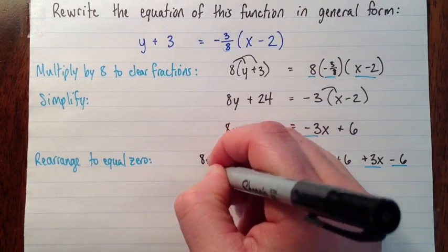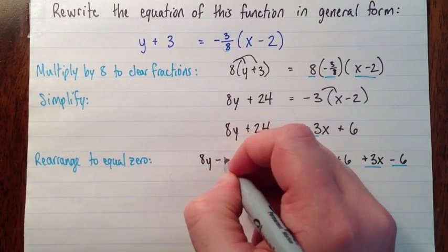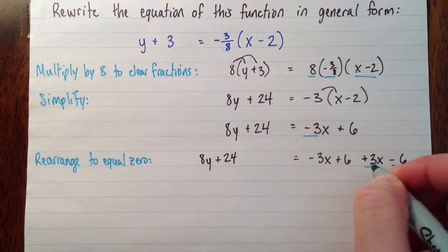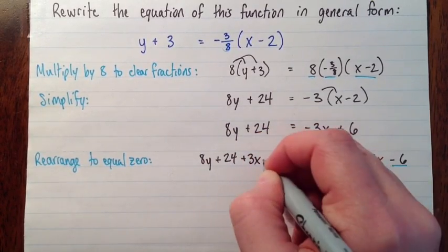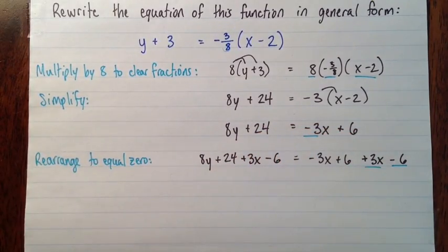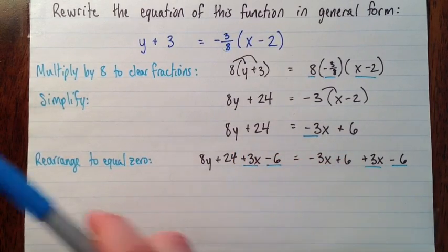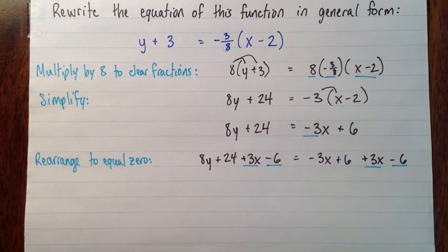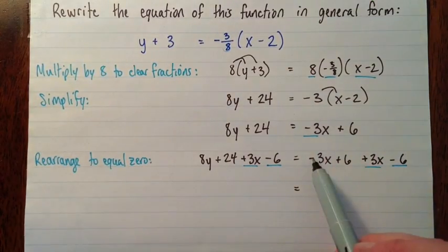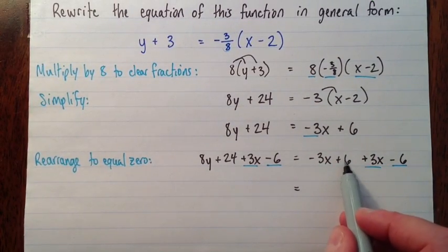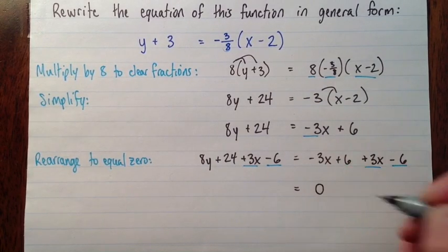So here I'll have 8y plus 24 plus 3x minus 6. So just underline the new thing there. Alright. And then here we should get 0. If we didn't get 0, we did it wrong. So negative 3x plus 3x, that's 0. And 6 minus 6, that's 0. That was the point of that.